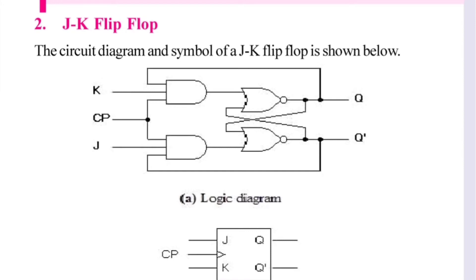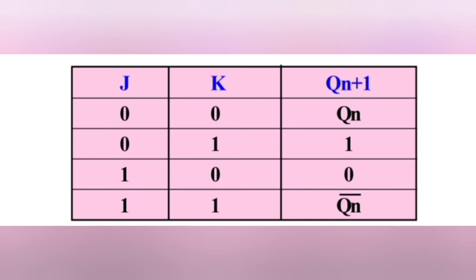We have to use a clock and AND gates with 3 inputs. The inputs are K and J, and we use feedback. Now we have the truth table. JK inputs determine the Qn+1 state.